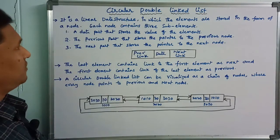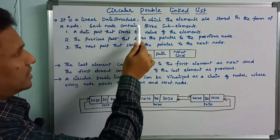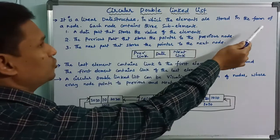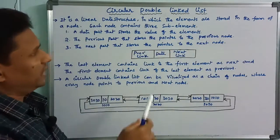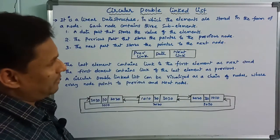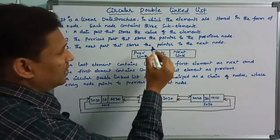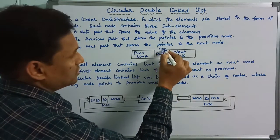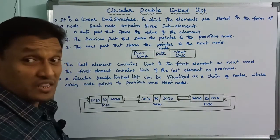First of all, this is a linear data structure in which the elements are stored in the form of a node. Each node contains three sub-elements. So this node has three parts.